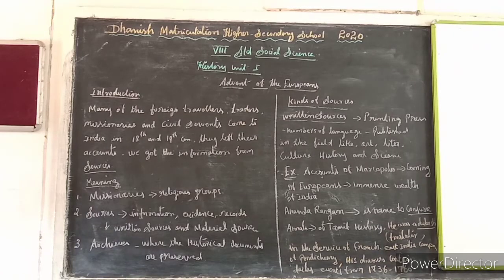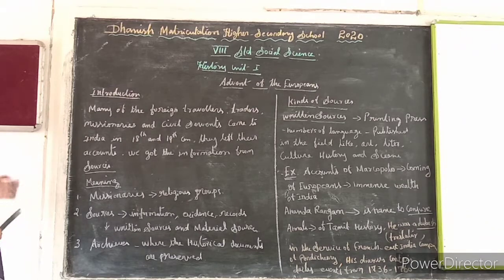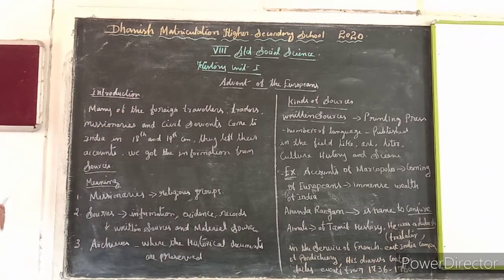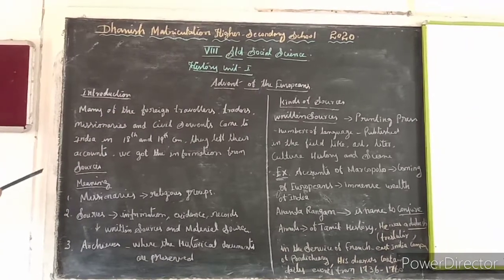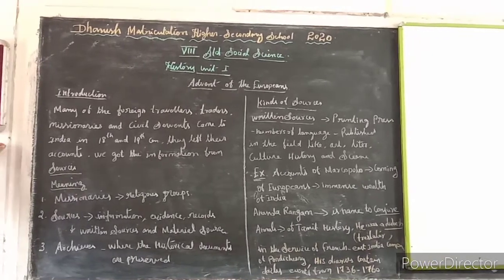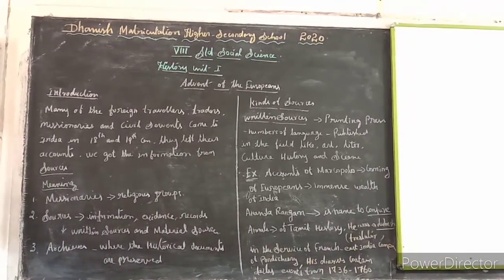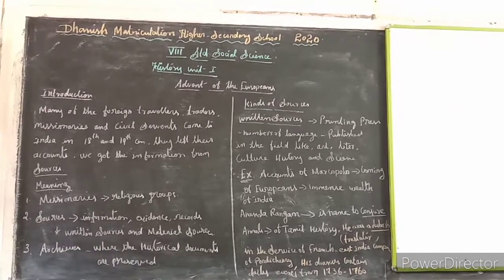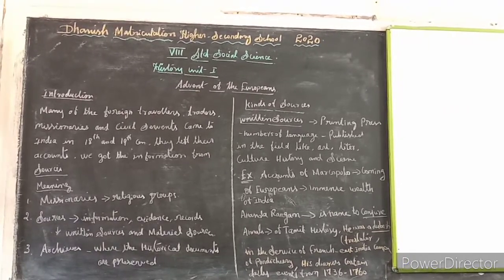Welcome to Social Science Class, Standard A, History in Japan — Advent of the Europeans. The meaning of Advent of the Europeans is the coming or arrival of Europeans in India. The European countries that are important are the Portuguese, Dutch, French, Danish, and British.